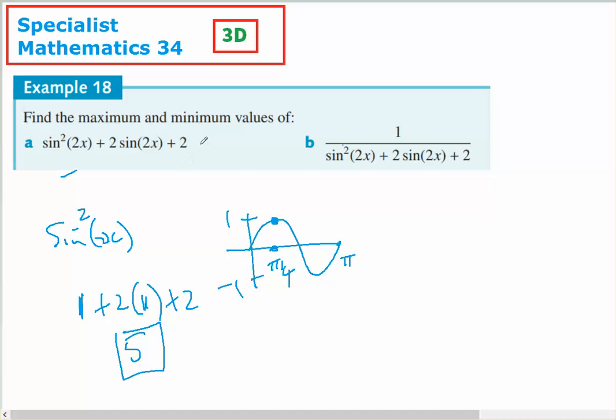When will the minimum occur? The minimum will be when sine of 2x equals negative 1, because 2 times negative 1 plus 2 is going to be 0, and then negative 1 squared will give you a value of 1, so this should have a maximum of 5 and a minimum of 1, which means the reciprocal of it.